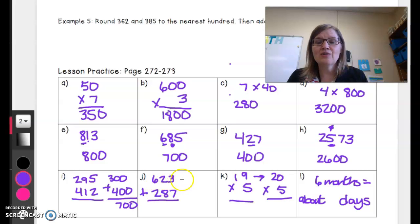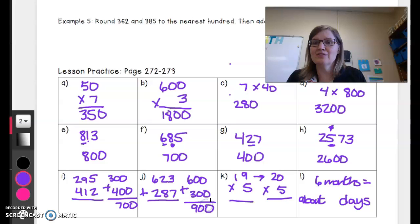Same thing on here. 623 to the nearest hundred is 600. We round 287 to the nearest hundred, it's going to be 300. We add these together, easy peasy, 900.